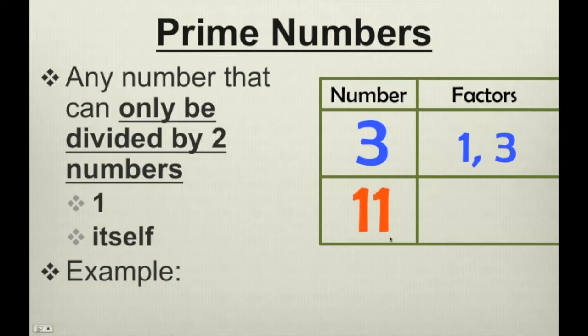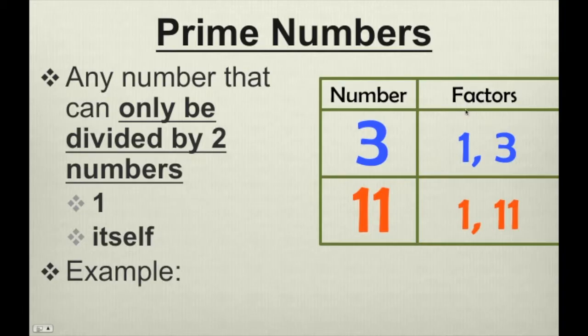How about 11? Same thing. It only has two factors, 1 and itself. So 3 and 11 are also prime numbers, because they only have two factors, 1 and itself.